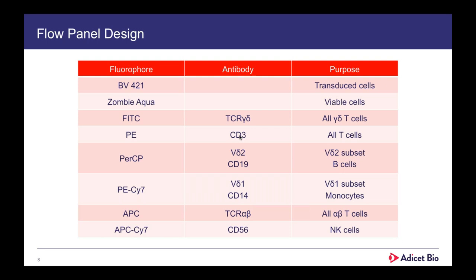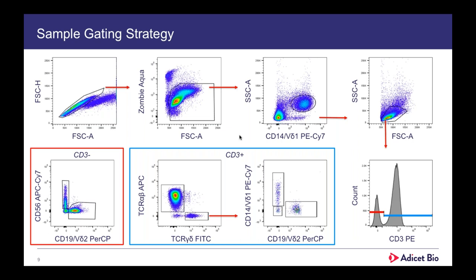To give you a sense of the complexity of our flow cytometry panel, we use an eight-color panel run on a CANTO2, with 10 different antibodies to identify different aspects of the material. Our particular focus is on gamma delta T cells, identifiable by a TCR gamma delta antibody and also through CD3. We have two gamma delta subsets of interest: V-delta-1 and V-delta-2. We can also look at impurities including B cells through CD19, monocytes through CD14, alpha-beta T cells through TCR alpha-beta staining, and NK cells with CD56.